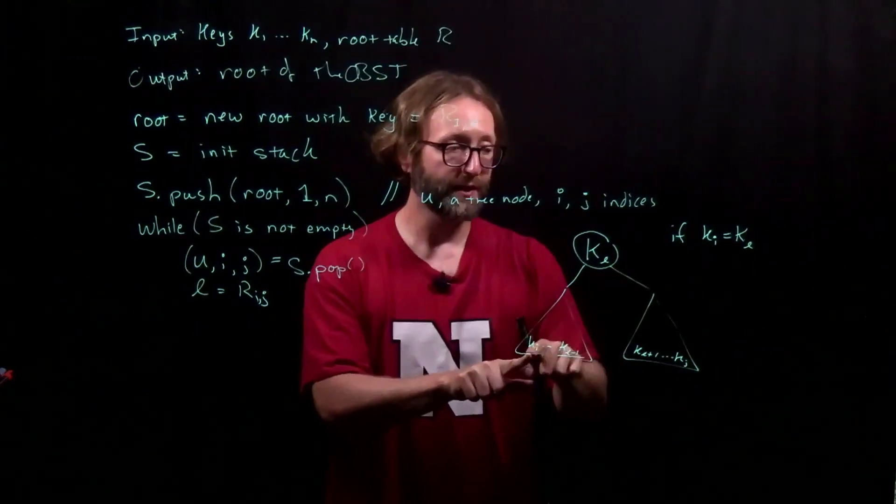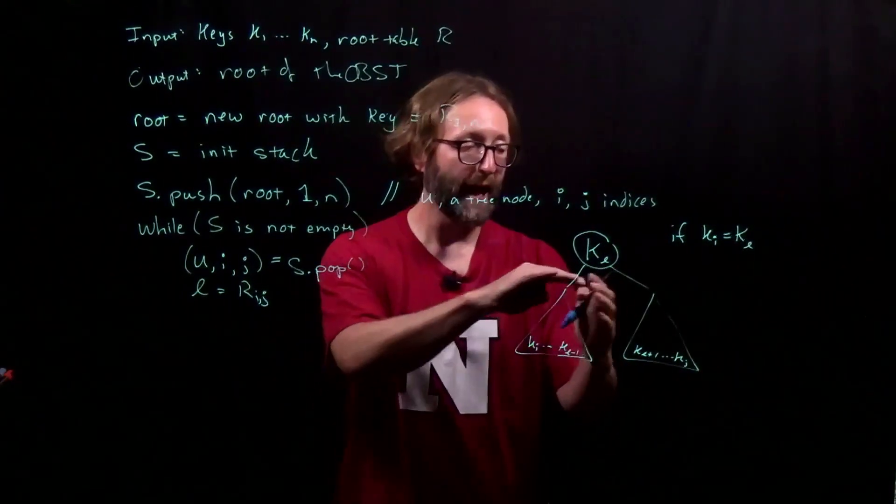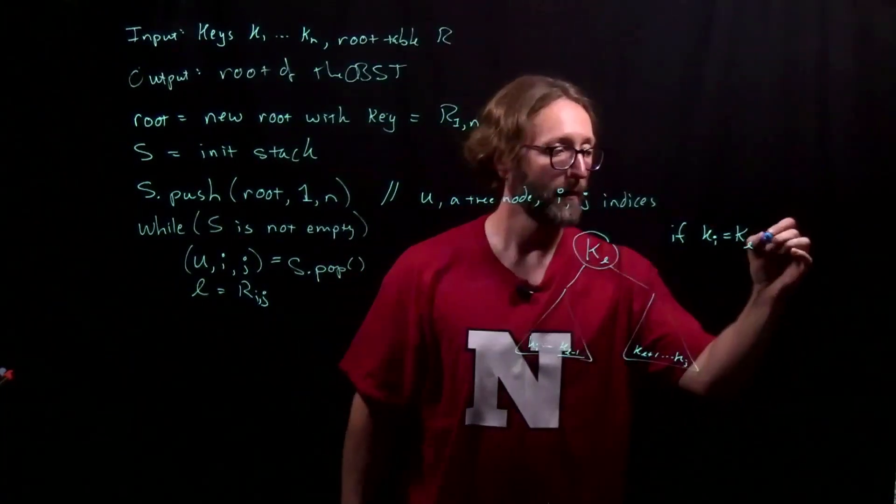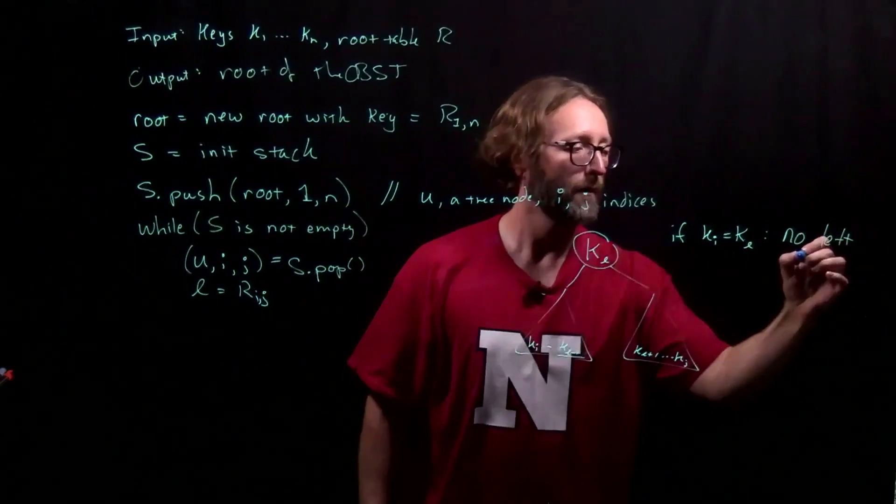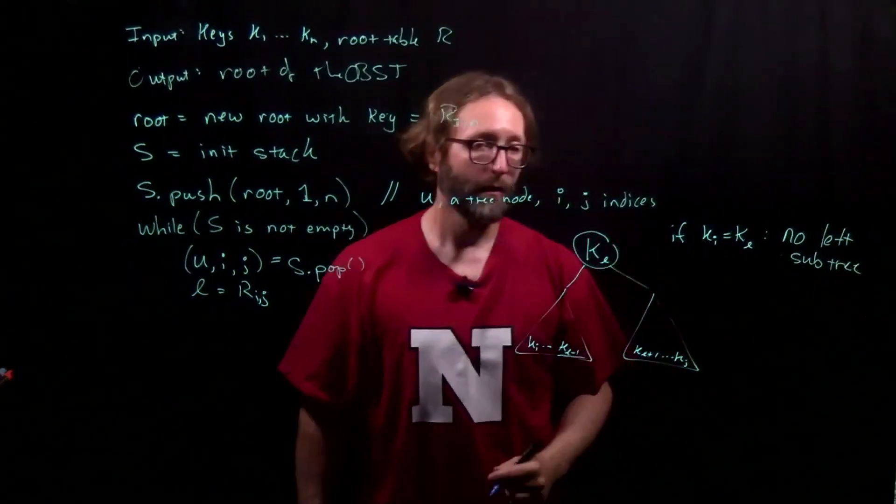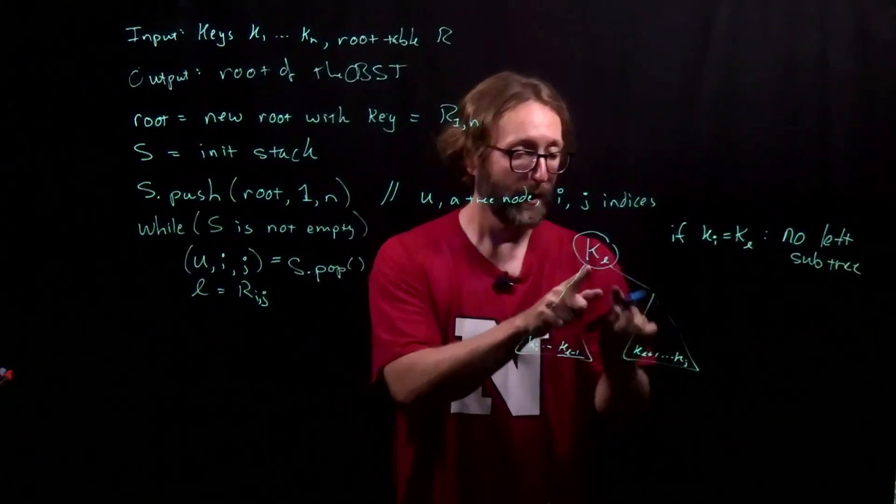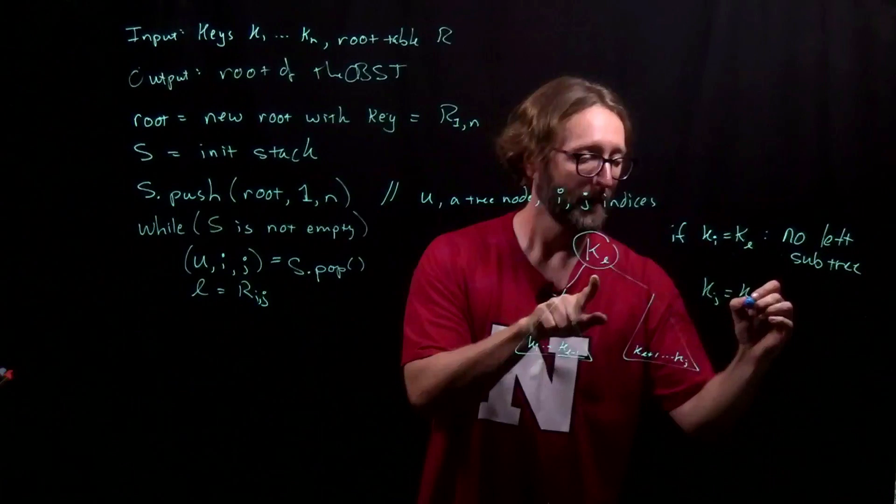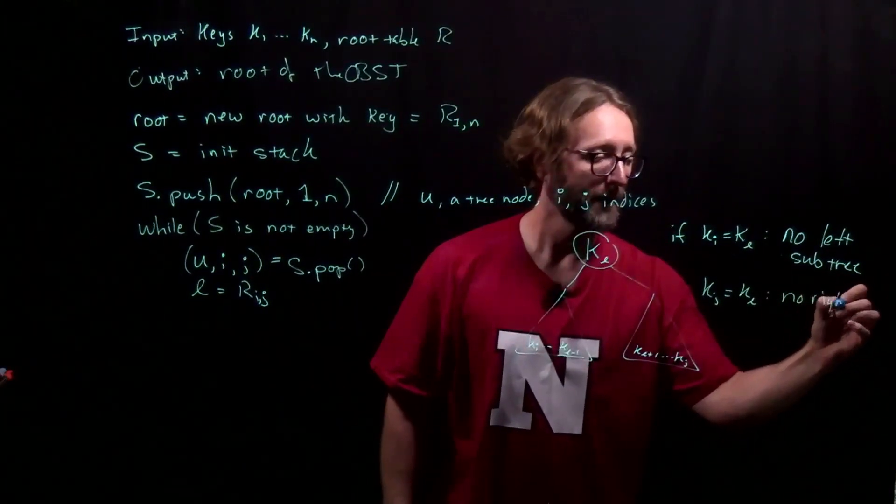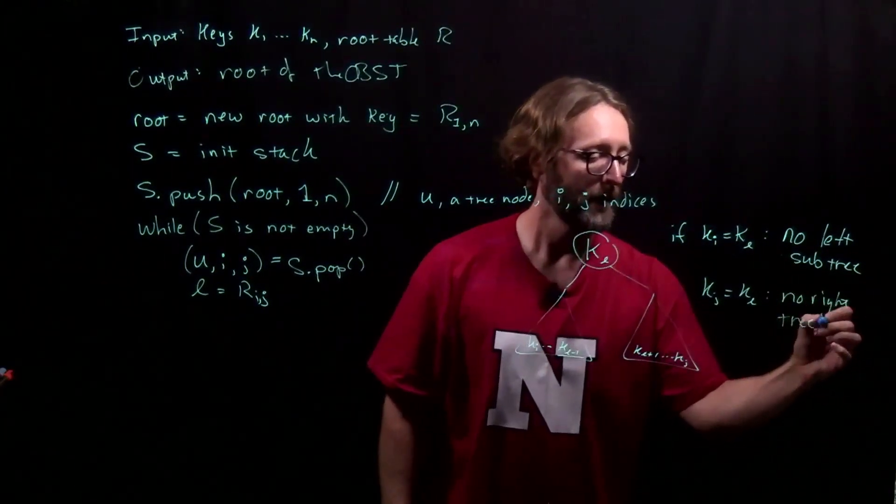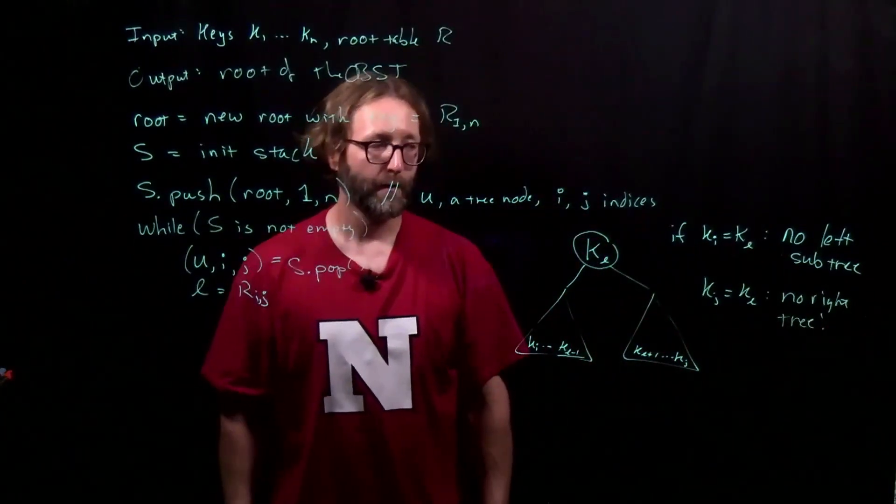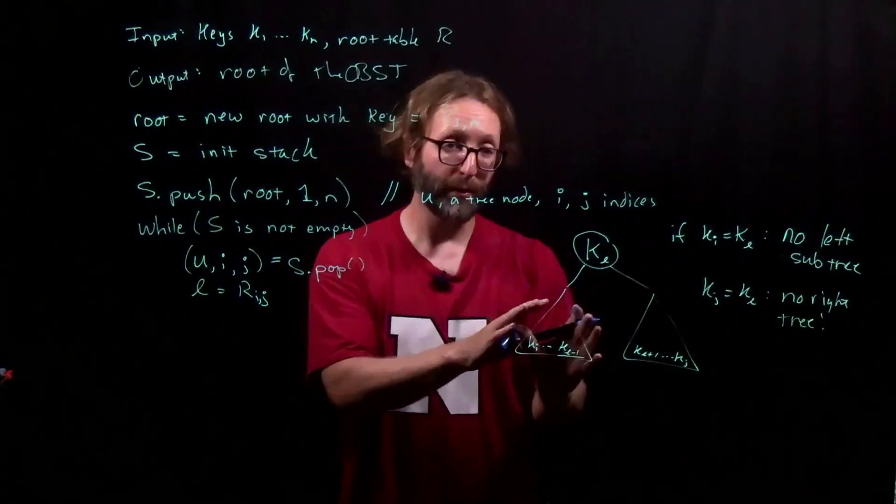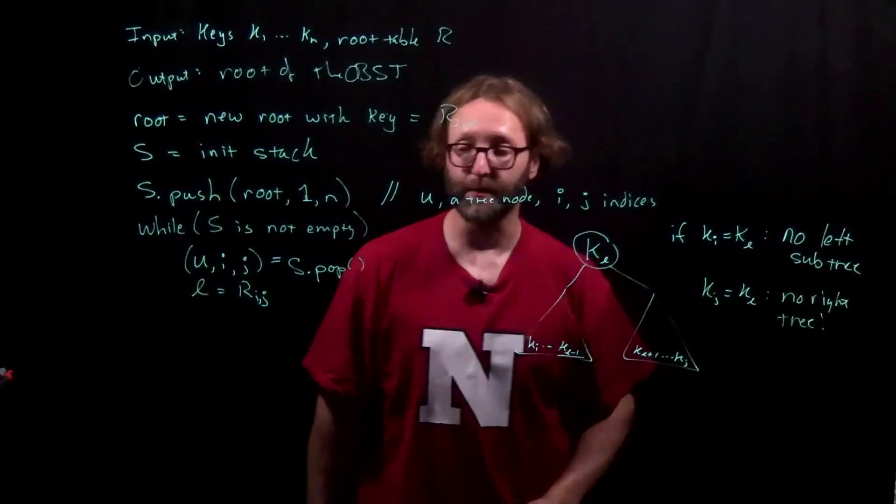If the root value here is the first key, then that means that everything is over here, and we don't have a left child, and we don't have a left subtree. On the other end of the extreme, if k sub l is equal to k sub j, then there's no right tree. We'll use both of these criteria to determine whether or not we should continue building the left subtree and or continue building the right subtree.